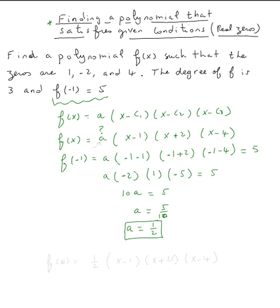Now that we found a equals one half, just plug it in and we're done. So f of x equals one half times x minus one, times x plus two, times x minus four. And we're done, this is it.